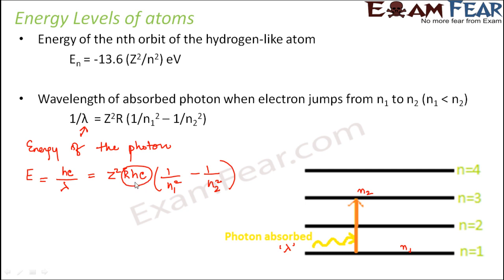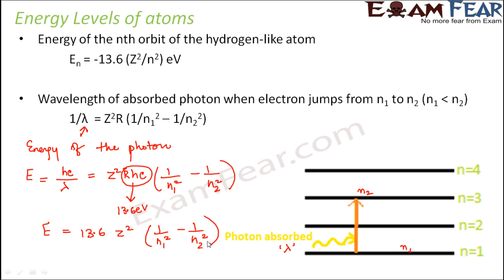Here R, h (Planck's constant), and c (speed of light) are all constants, and together Rhc equals 13.6 electron volts — this combined constant is often called the Rydberg constant. Therefore, E equals 13.6 Z² times (1/n1² minus 1/n2²). This expression calculates the energy of both the absorbed and emitted photon, depending on whether the electron is jumping up or down.